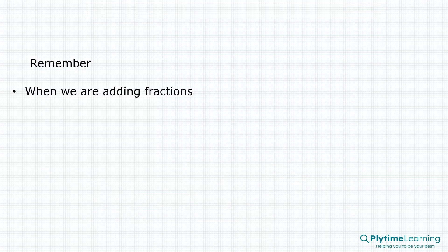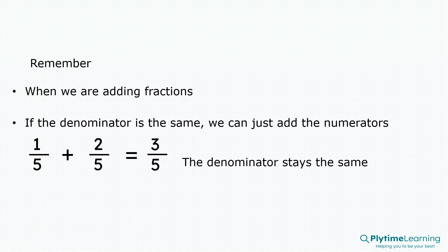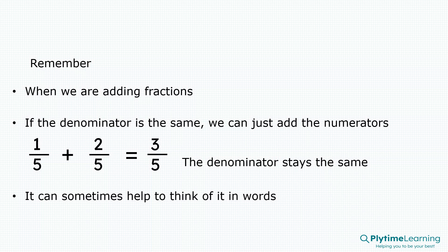Remember, when we're adding fractions, if the denominator is the same in the fractions, we can just add the numerators. One fifth plus two fifths equals three fifths. The denominator stays the same. It can sometimes help to think of it in words.